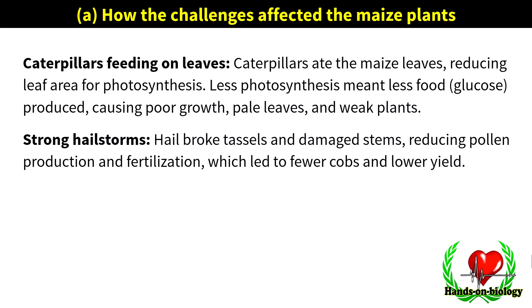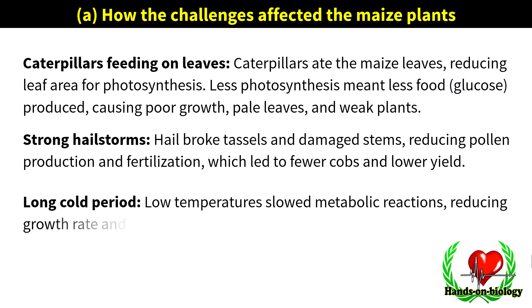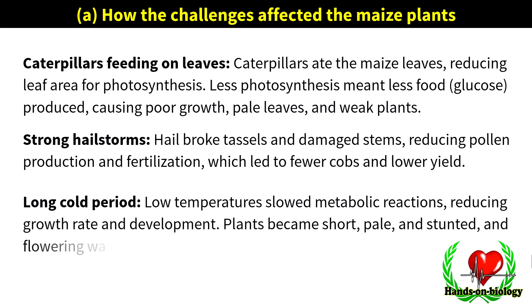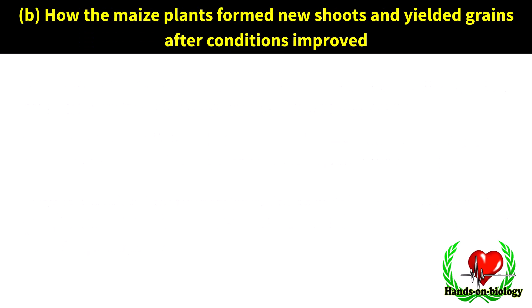Long cold period: low temperatures slowed metabolic reactions, reducing growth rate and development. Plants became short, pale, and stunted, and flowering was delayed.